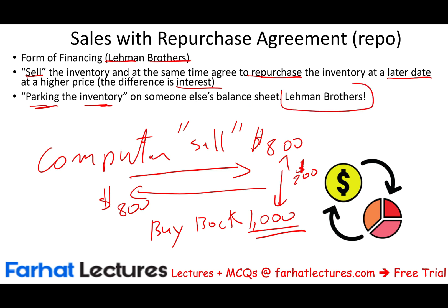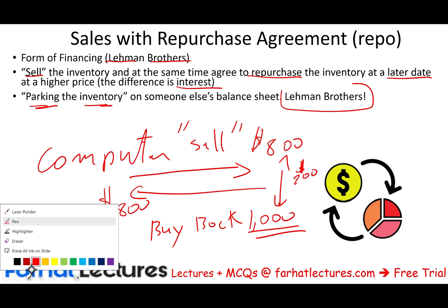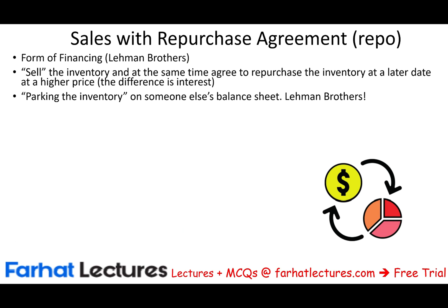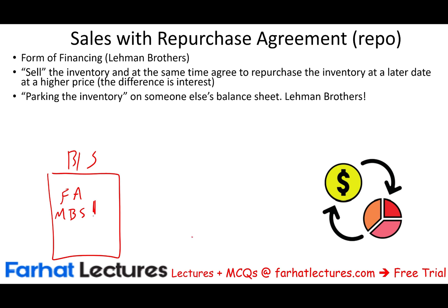Now let's talk about Lehman Brothers. Lehman did not have physical inventory. What Lehman had on their balance sheet were financial assets — specifically, mortgage-backed securities. Those were the assets, and they dropped significantly in value. For example, something purchased for $1 million might now be worth only $600,000.